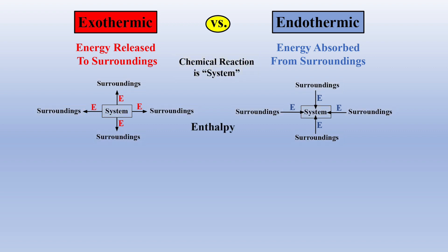In an open system or constant pressure system, we may use the term enthalpy to describe this change in energy as reactants form products, abbreviated capital H, which will have two parts: the sign — either negative or positive — and the magnitude of change, which is usually in kilojoules per mole.